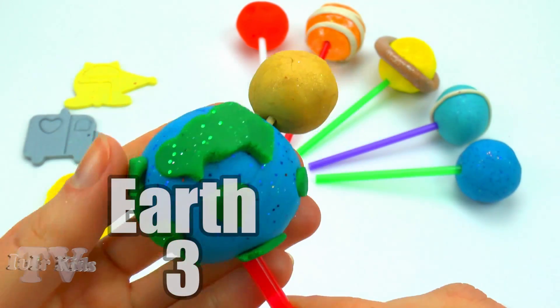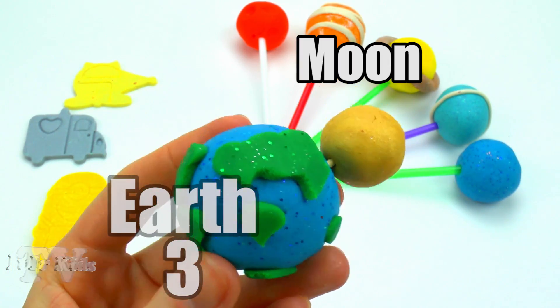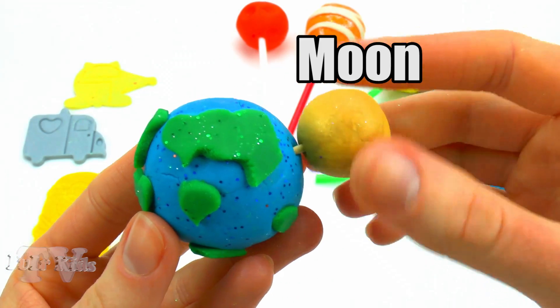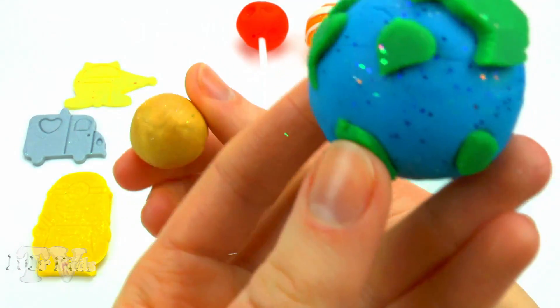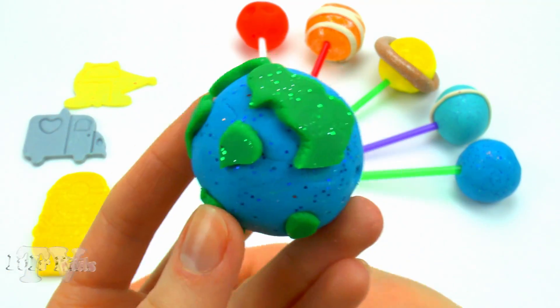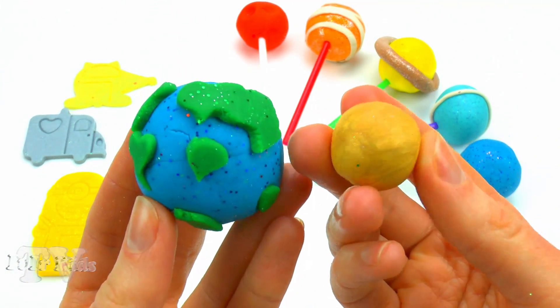Earth. Earth is the third planet from the Sun. Sometimes it is mentioned as the world, or the blue planet. Earth is the only known body of the solar system inhabited by living organisms. The Earth has one natural satellite, the Moon.